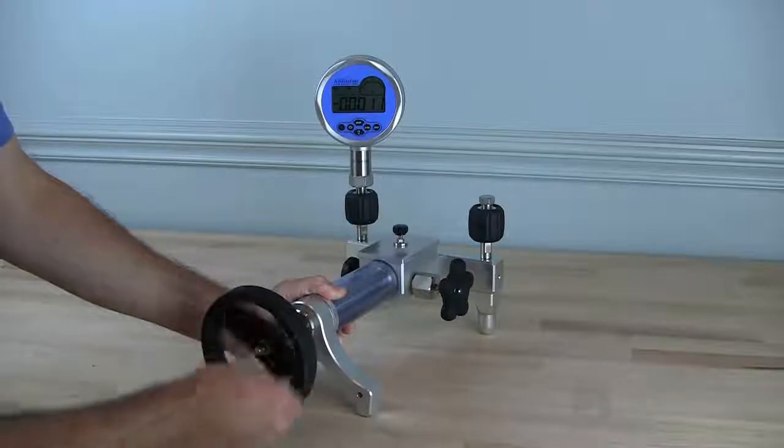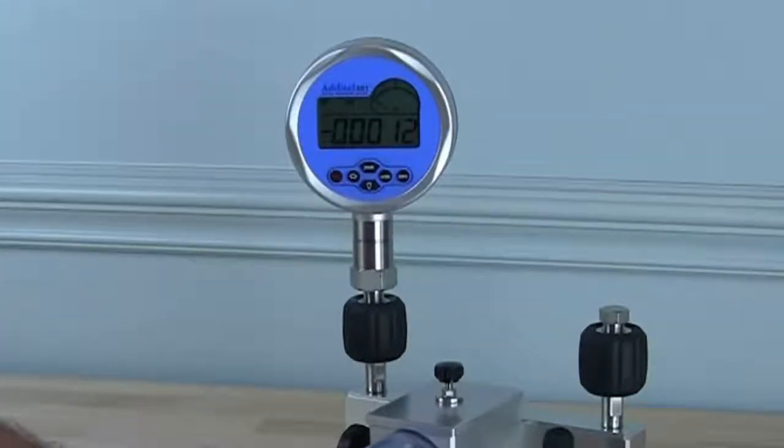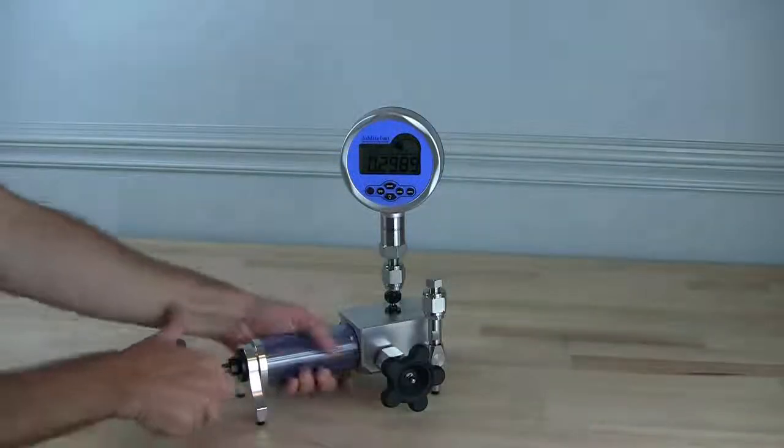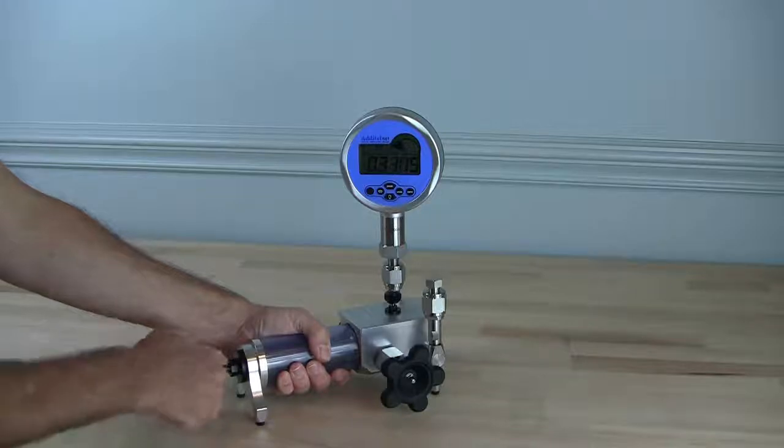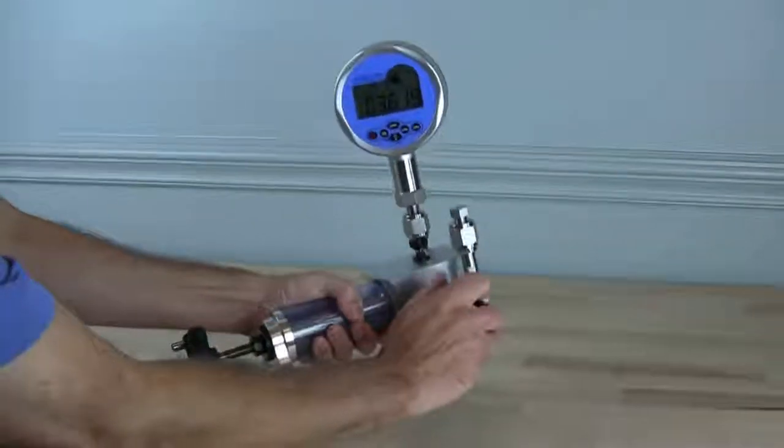Both pumps can also generate minus 12.5 PSI of vacuum by rotating the variable volume screw press counterclockwise. The ADT925 weighs in at only 3.8 pounds and is ideal for portable applications.